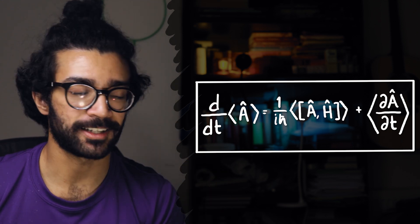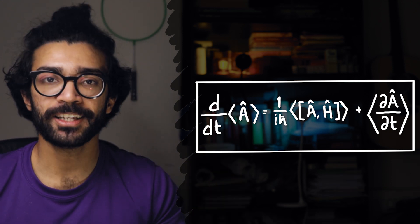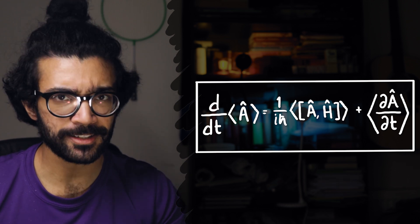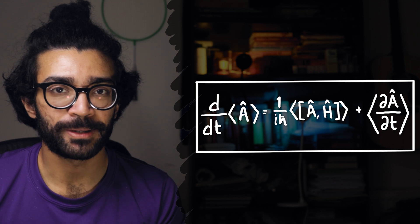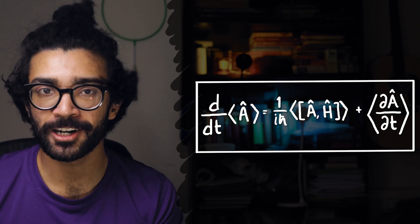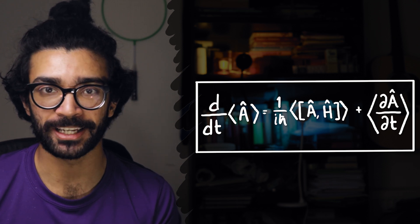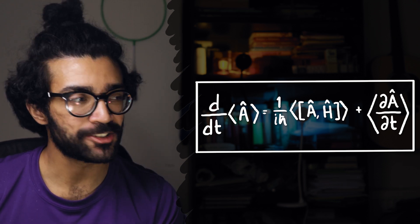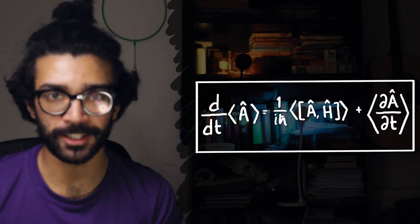So this is Ehrenfest's theorem. It looks really daunting, but the really interesting thing about it is that it can be thought of as a link between classical physics and quantum mechanics. Classical physics, of course, being everything in physics that came before Albert Einstein's era, and quantum mechanics being the weird strange stuff that we'll be looking at in this video. But before I explain exactly what each term in this equation means, we need to lay down some groundwork.